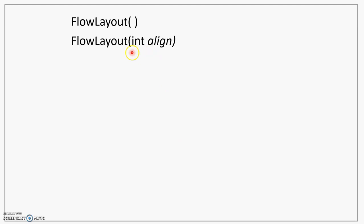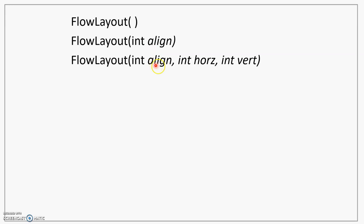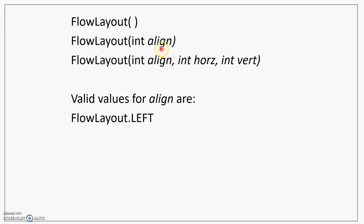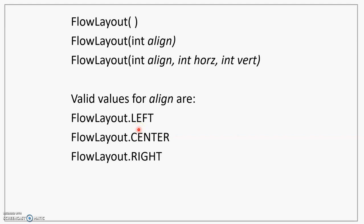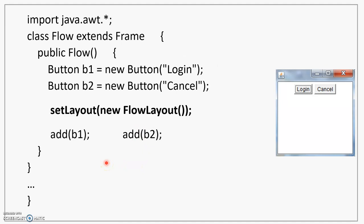FlowLayout has a default constructor. The second constructor allows you to pass the alignment, so all components can be left aligned, right aligned, or center aligned. The third constructor also allows you to pass the horizontal and vertical gaps — the spaces you want to leave between the components. Valid values for the align parameter are FlowLayout.LEFT, FlowLayout.CENTER, or FlowLayout.RIGHT. These are defined as constants within the FlowLayout class.